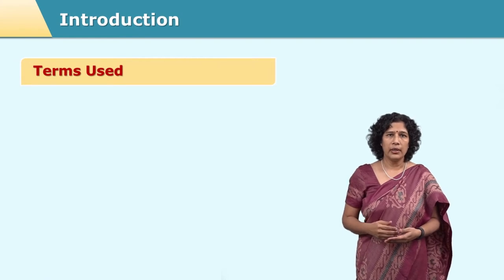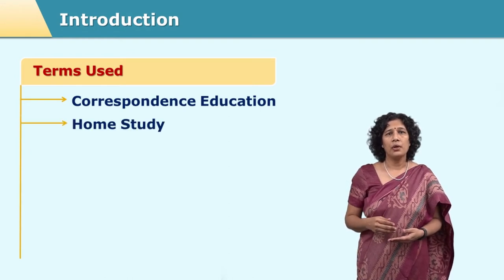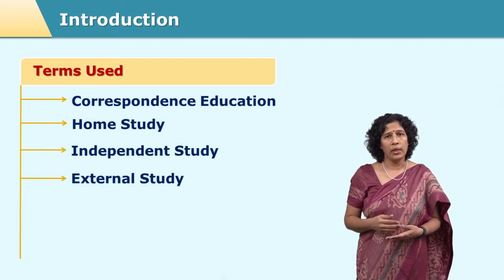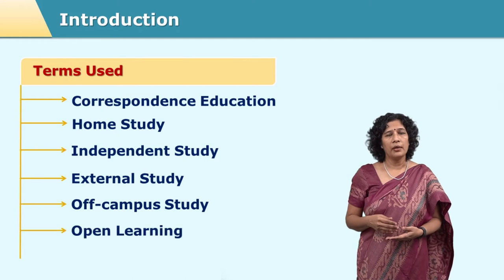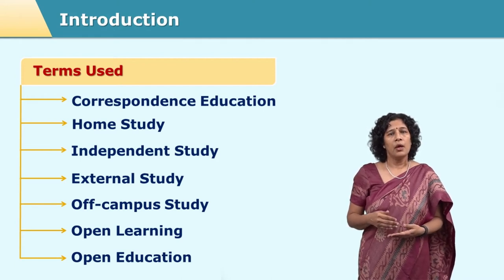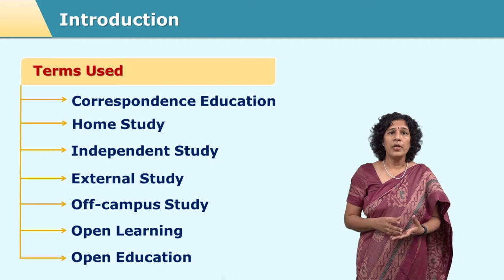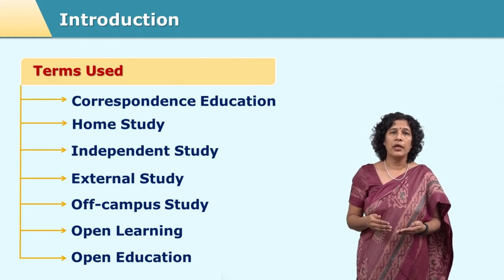Some other terms used for open distance learning are correspondence education, distance education, and open education. This system of education has come a long way. Initially there was use of only print media, whereas now it is making use of many media at the same time. The term correspondence education is no more in use, but open and distance learning is the latest terminology. The concept of openness has been added to a great extent when it comes to distance education, and hence these two terms are used together.